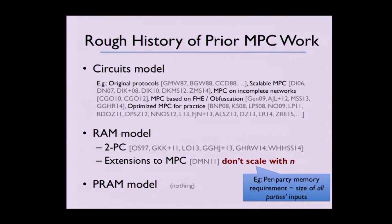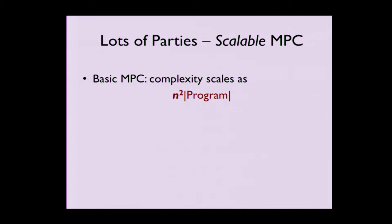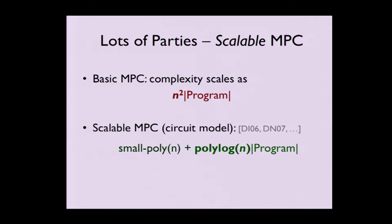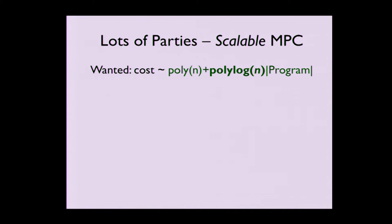Let me go into more detail about scaling with N. As a baseline, the original MPC protocols scale roughly as N² times the size of the program — for example, in GMW, for every single gate of the circuit, everybody has to communicate with everybody else, giving the N² term. There's a nice line of work beginning with Damgaard-Ishai on scalable MPC, where they bring this term down to a relatively small polynomial in N plus the size of the program times only a polylogarithmic overhead in terms of the number of parties. Whenever I say scalable MPC, this is what I'm referring to.